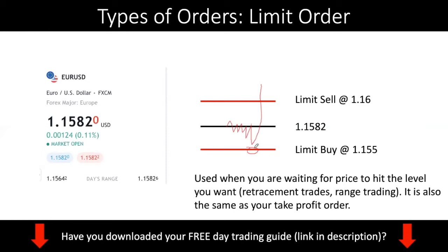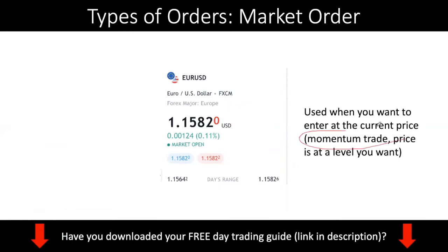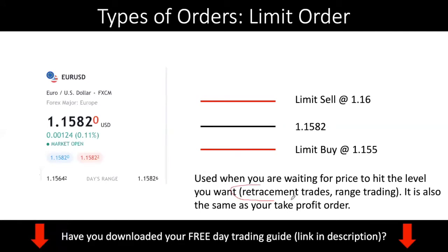In cases of momentum trades, you do not want to be using limit orders. You want to be using limit orders for retracement trades — when you are trying to buy at a good level — or for range trading where you are trying to buy at the bottom of the range and sell at the top of the range.